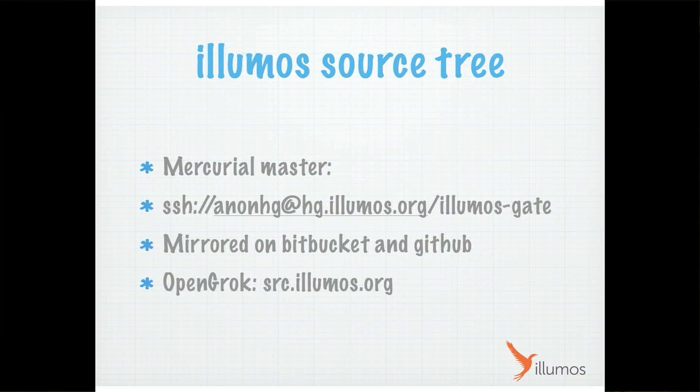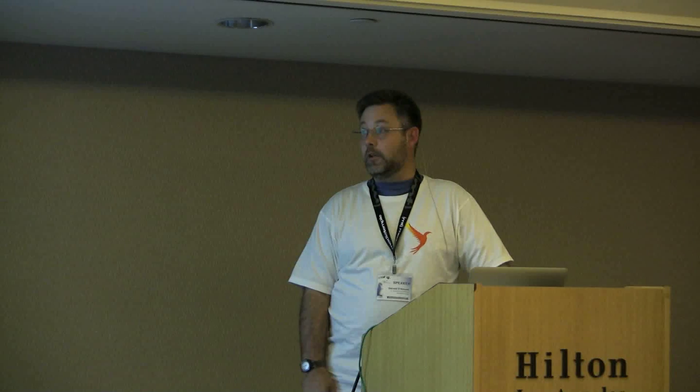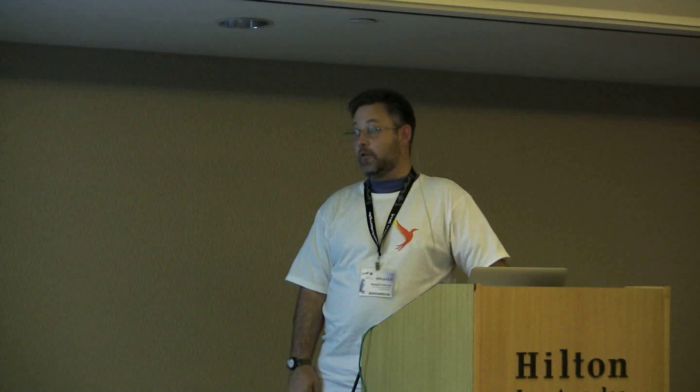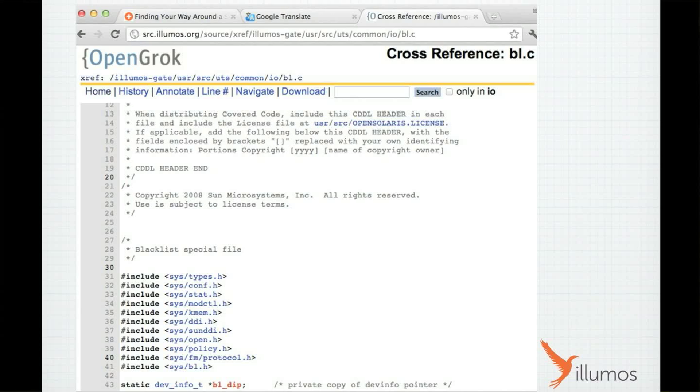Where do you find the source tree? We've got it in Mercurial, and there are also Git mirrors — Google is your friend, or ask me offline. I just access the Mercurial stuff directly. There's stuff on Bitbucket and GitHub. One of the nicest ways to peruse source is we have one of the best source code browsers around — it's called OpenGrok, and that was also developed at Sun. You can do all kinds of cross-indexing and searching. It's a really nice way to deal with source from the web. I actually use this all the time. Some people use Cscope, but with Cscope you've got to build a database and have a local repository — I can access OpenGrok from my iPhone if I have a question.